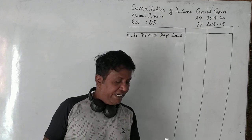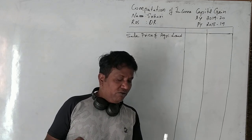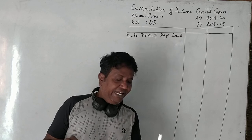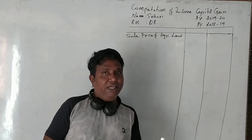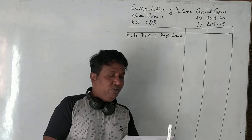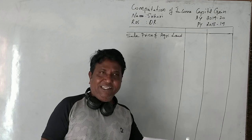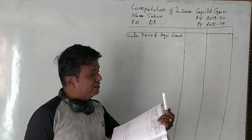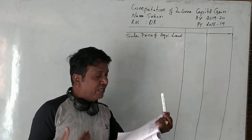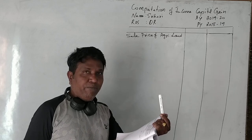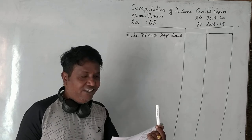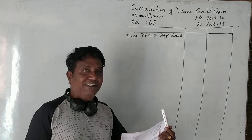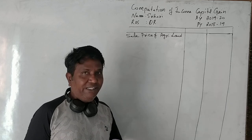Compute the taxable capital gain for the assessment year 2019-20. CII values are: 2003-04 is 109, 2008-09 is 137, and 2018-19 is 280. Mr. Vineet is selling his residential house property for Rs. 19 lakhs in November 2018, which falls in our previous year.